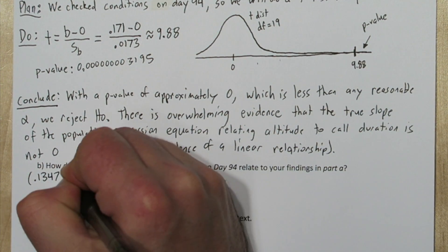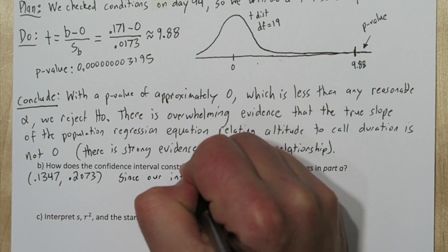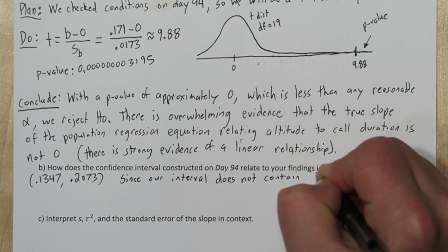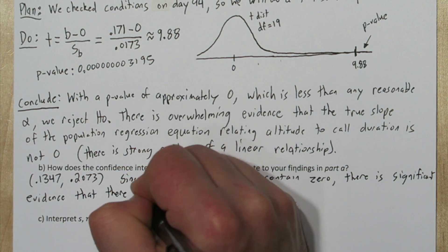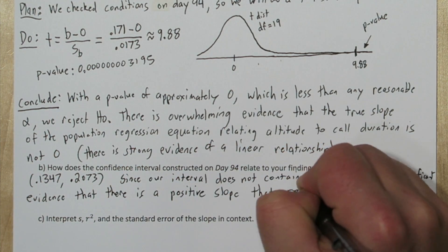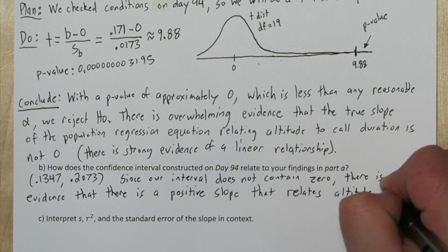Our confidence interval was 0.1347 to 0.2073. Now since this interval does not contain zero, there is significant evidence that there is a positive slope that relates altitude to call duration.